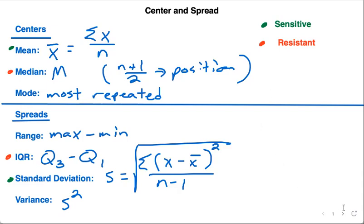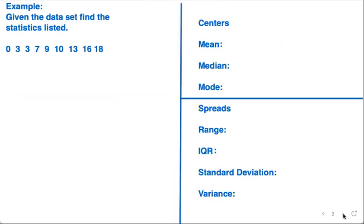Let's see. You're given the following data set, you're asked to find the following centers and spreads. Right now what I see overall is I see a sample size of one, two, three, four, five, six, seven, eight, nine. So sample size is equal to nine.